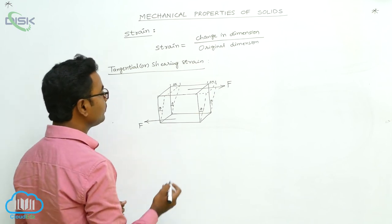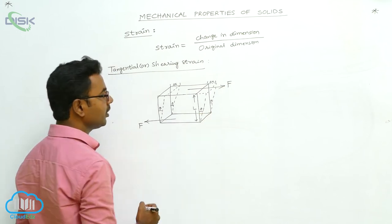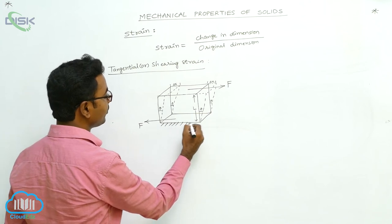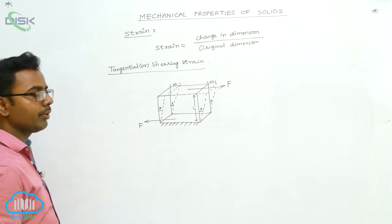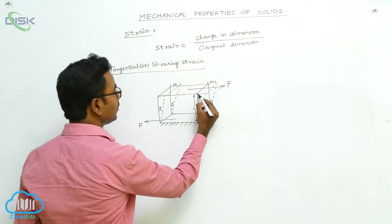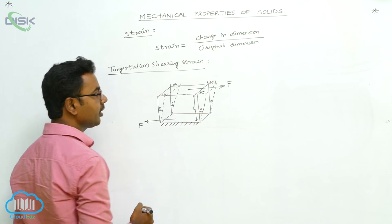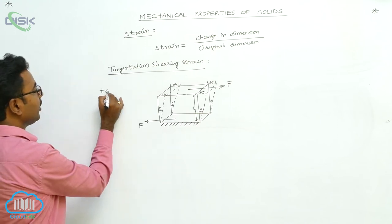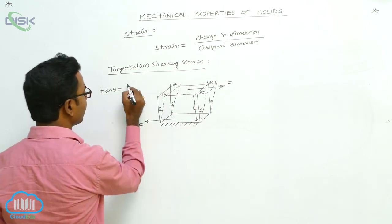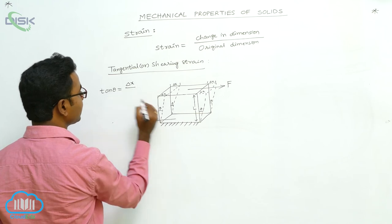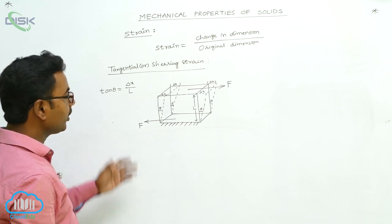Theta can also be expressed geometrically. Suppose the distance of the top surface from the fixed bottom surface is capital L. The displacement produced is Delta X. Applying trigonometry: tan(theta) equals the length of the opposite side, Delta X, divided by the length of the adjacent side, L. So tan(theta) = Delta X / L.